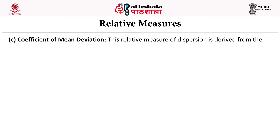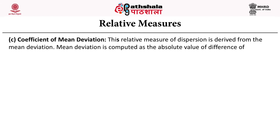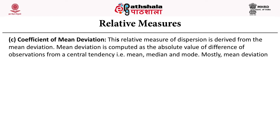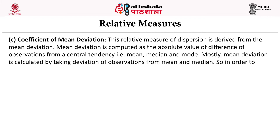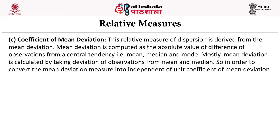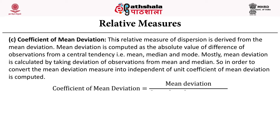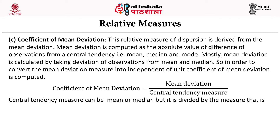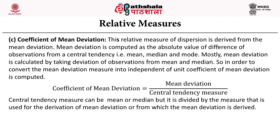Another relative measure is the coefficient of mean deviation. This relative measure of dispersion is derived from the mean deviation. Mean deviation is computed as the absolute value of the difference of observations from the central tendency — that is mean, median, and mode. Mostly mean deviation is calculated by taking deviation of observations from mean and median. To convert the mean deviation measure into one independent of units, it is computed as mean deviation divided by the central tendency measure — mean or median — from which the mean deviation is derived.